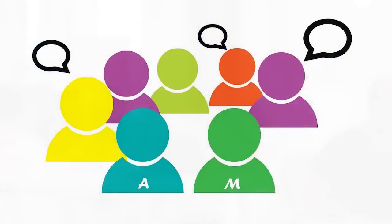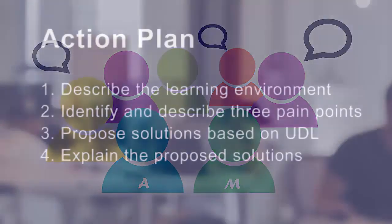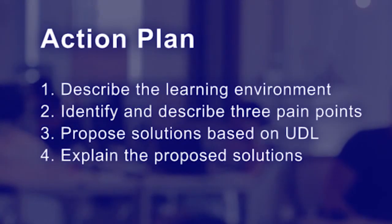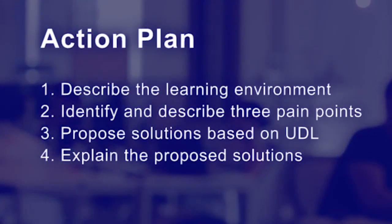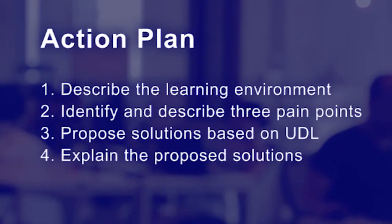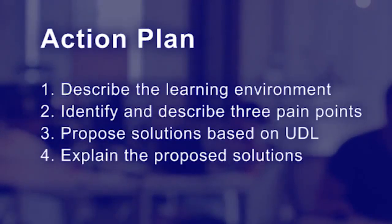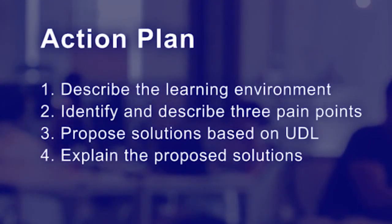You can and should discuss ideas for this assignment with your peers in a discussion that we created specifically for this purpose. To get full points, you will need to write a detailed description of the learning environment, identify and describe three problems or pain points within that learning environment, propose solutions based on the Universal Design for Learning principles for each, and explain how your suggestions will address the problems.